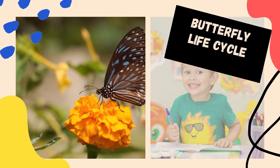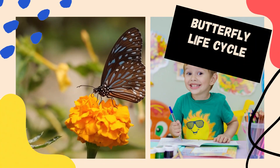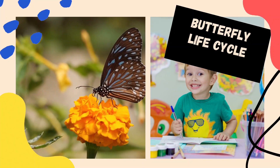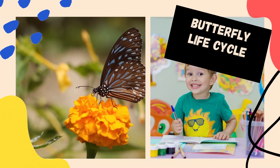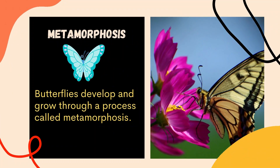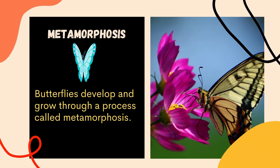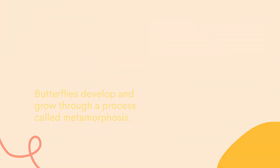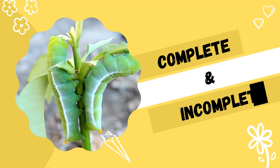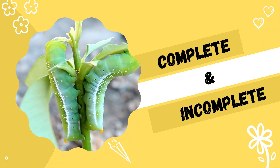Life Cycle of a Butterfly, Lesson for Kids. Butterflies develop and grow through a process called metamorphosis. There are two types of metamorphosis: complete and incomplete metamorphosis.